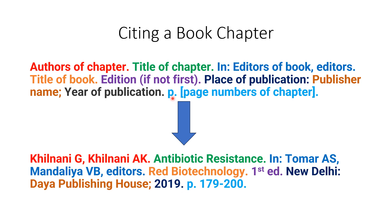Then we write 'p.' — where 'p' stands for page numbers — followed by a full stop, and then the page numbers. For this book, the pages are from 179 to 200, and finally a full stop. This is the format of citing a book chapter of an edited book in Vancouver style. There are nine components, and we need to keep in mind the places where specific punctuation marks are to be used.